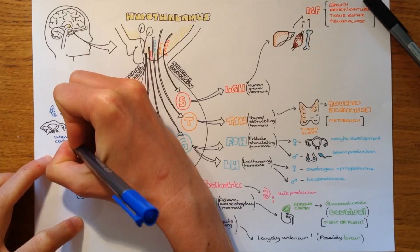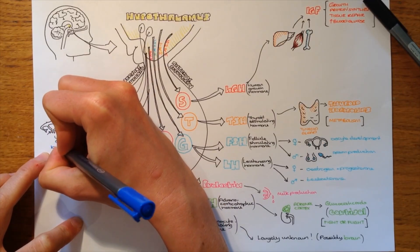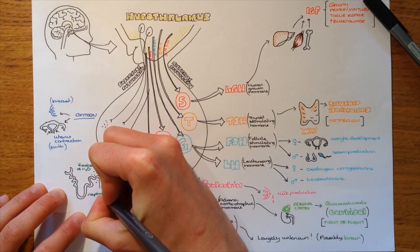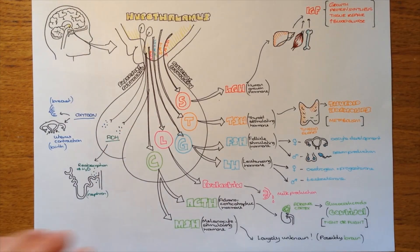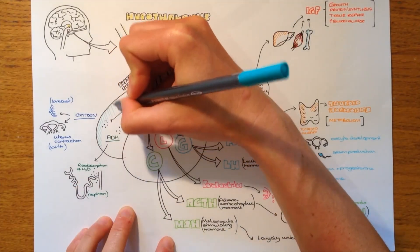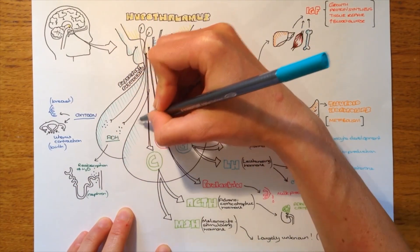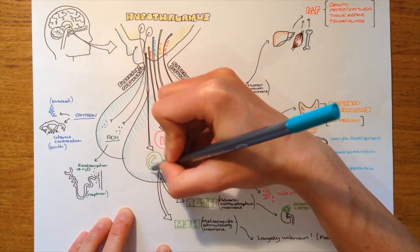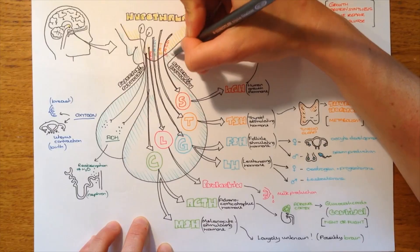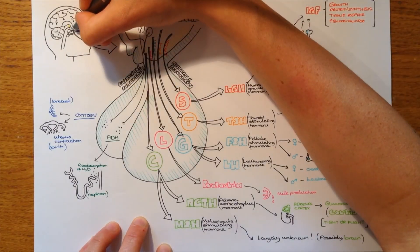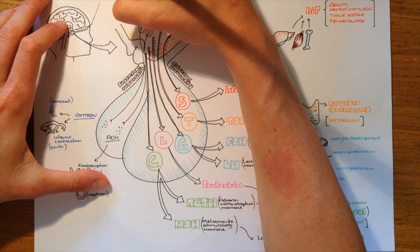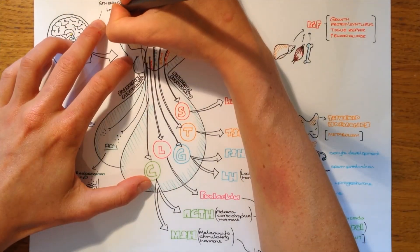So, just to recap, posterior pituitary, two hormones are released. These are released by neurons from the hypothalamus, as opposed to being produced in the posterior pituitary. They're actually just stored in the posterior pituitary, which is different to the anterior pituitary, which has different cell types, and these are stimulated by hormones from the hypothalamus to produce pituitary hormones. Five different cell types produce seven different hormones in total.